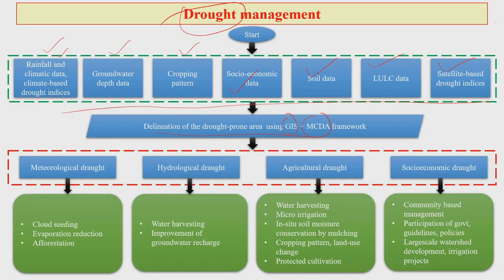Now let us see what different kinds of droughts you can expect, because based on the type of drought, we need to decide on the management practices. We have meteorological drought, hydrological drought, agricultural drought, and socio-economic drought. Each one of them has a different manifestation of the single phenomenon that is drought, and each certainly needs different types of management practices.